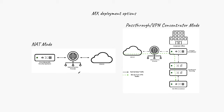Starting with NAT mode on the left-hand side — we can see the elements of the network. There's the MX, which is going to be here sending traffic through the internet, reaching out to the different applications, whether that's Office 365, Google, or whatever other places on the internet.